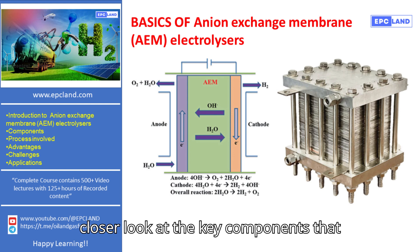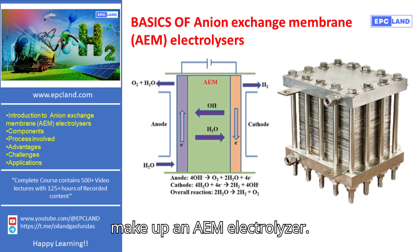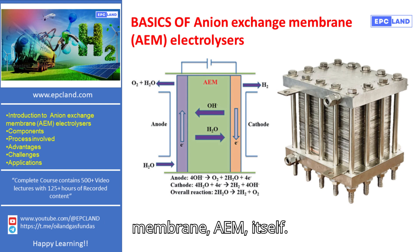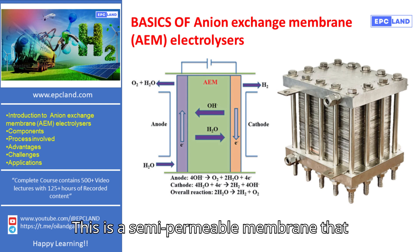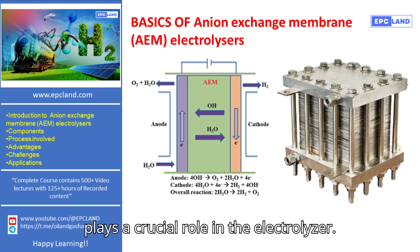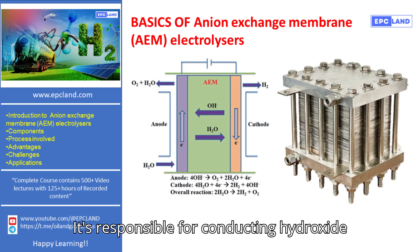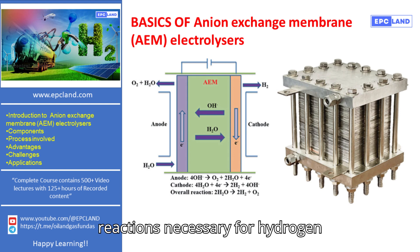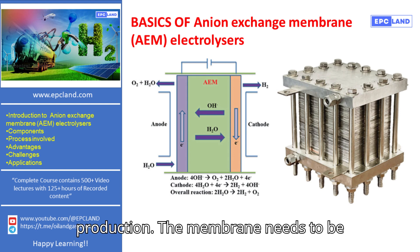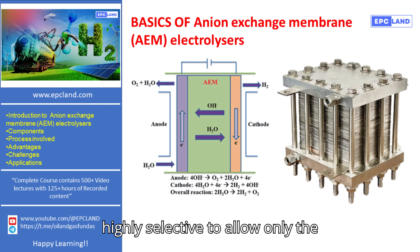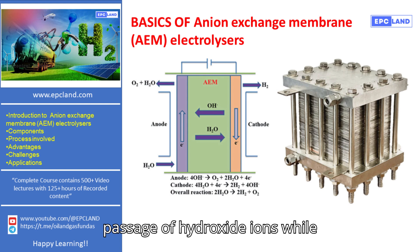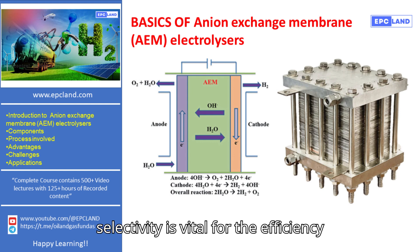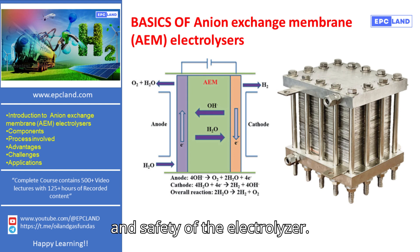Let's start by taking a closer look at the key components that make up an AEM electrolyzer. First, we have the anion exchange membrane, or AEM, itself. This is a semi-permeable membrane that plays a crucial role in the electrolyzer. It's responsible for conducting hydroxide ions from one side of the cell to the other, enabling the electrochemical reactions necessary for hydrogen production. The membrane needs to be highly selective to allow only the passage of hydroxide ions while preventing the crossover of gases like hydrogen and oxygen. This selectivity is vital for the efficiency and safety of the electrolyzer.